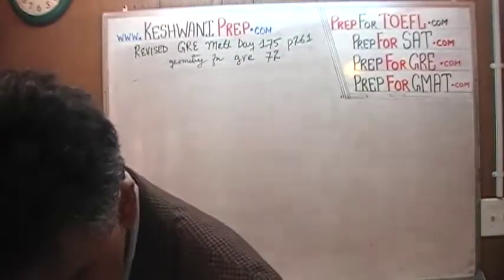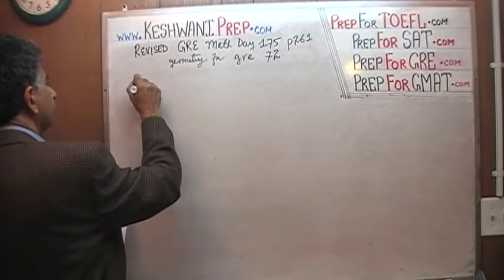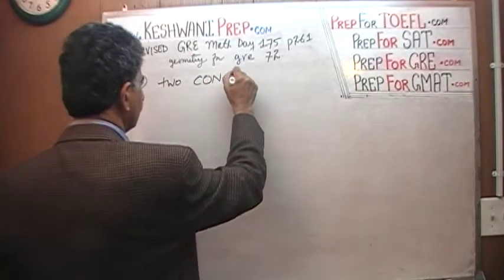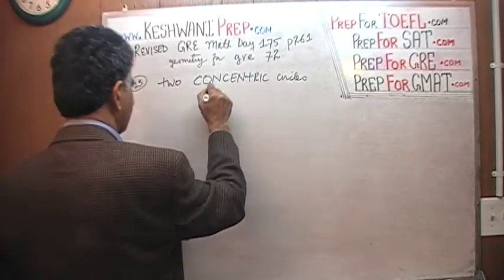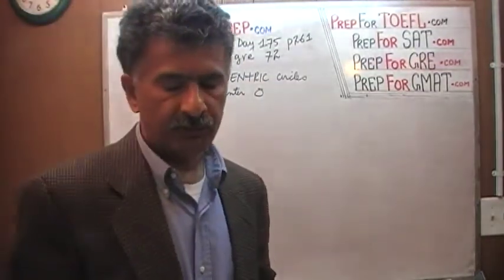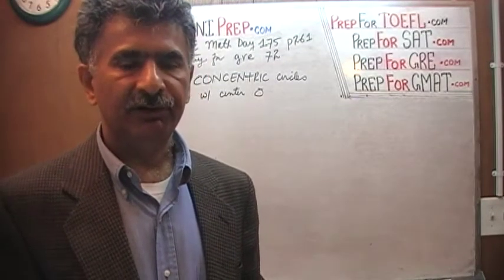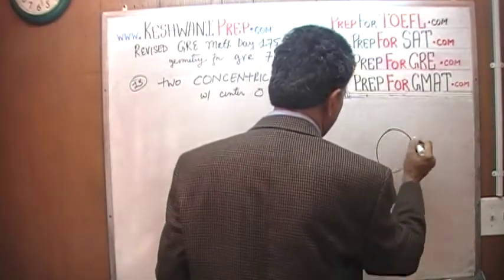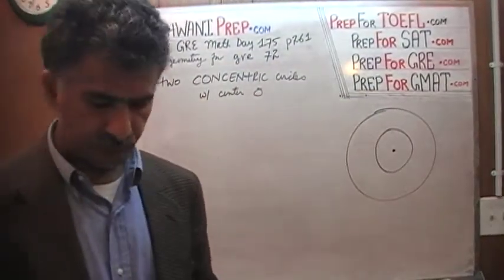We are given two concentric circles with center O. What does concentric circle mean? Concentric circle means these circles have the same center. They share the center. Okay, so let's draw two concentric circles. Here is the small one and here is the large one. It is not drawn properly but it is close enough. Don't look at my picture. Look at the picture that they give you obviously because it is drawn properly.